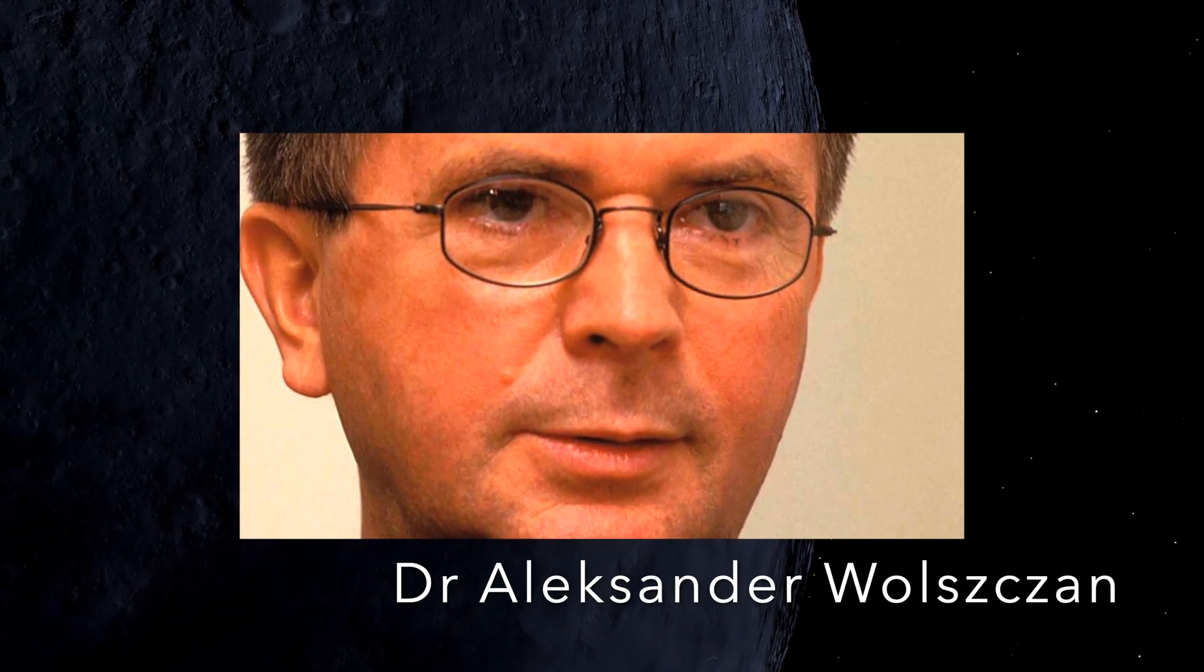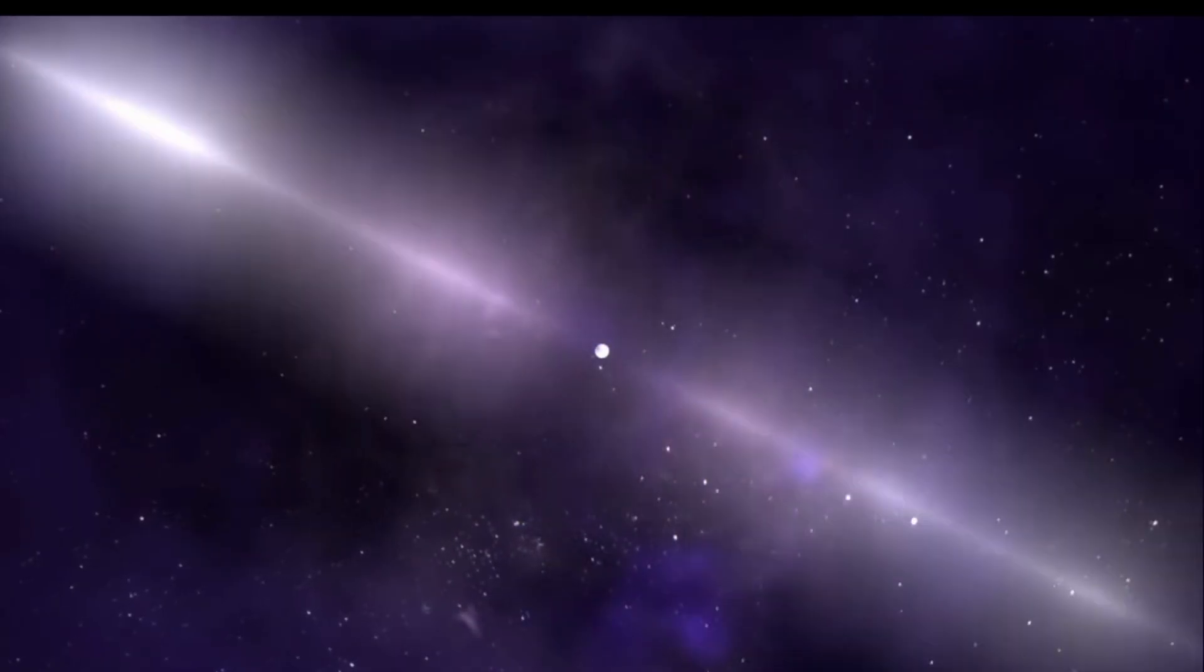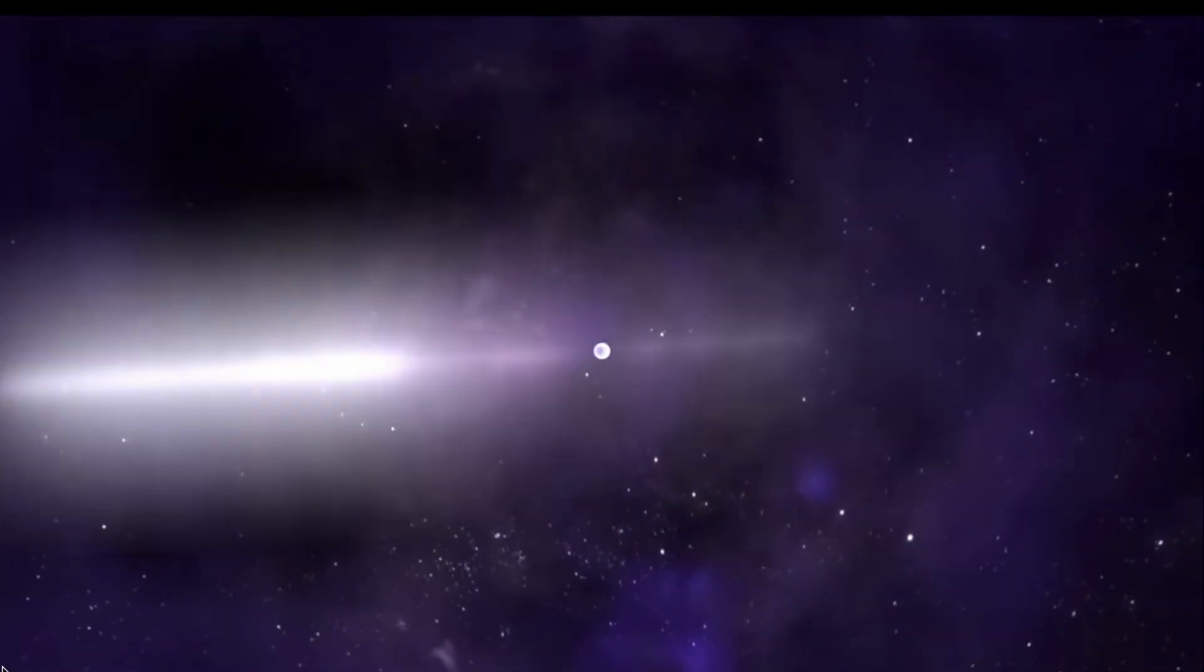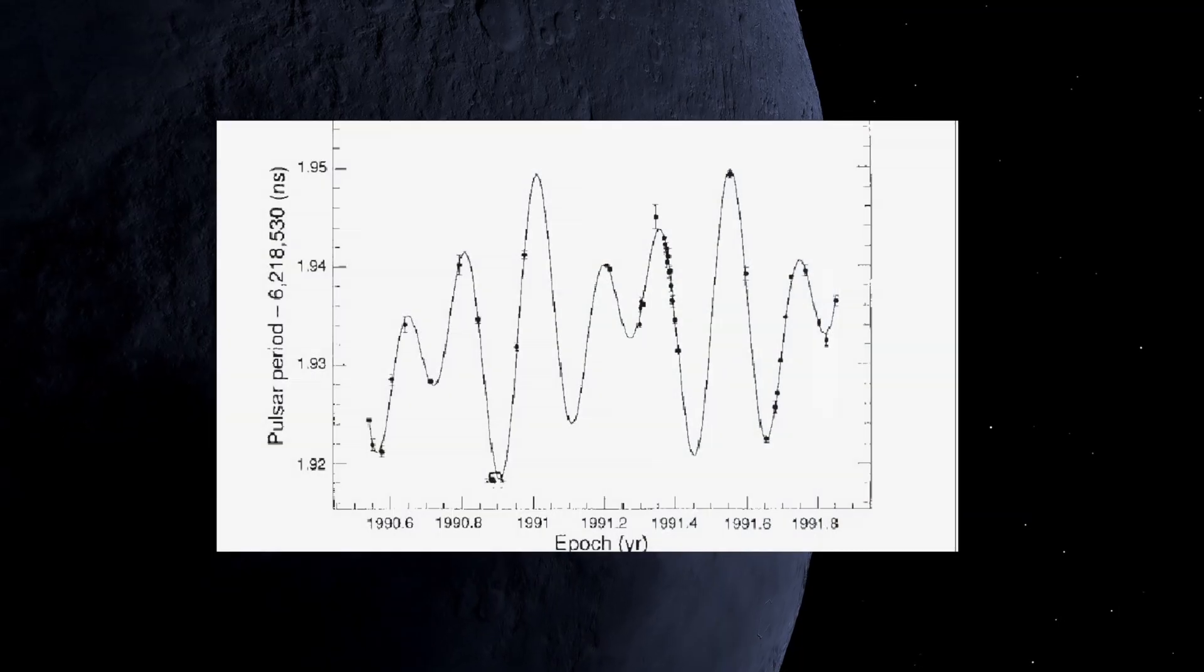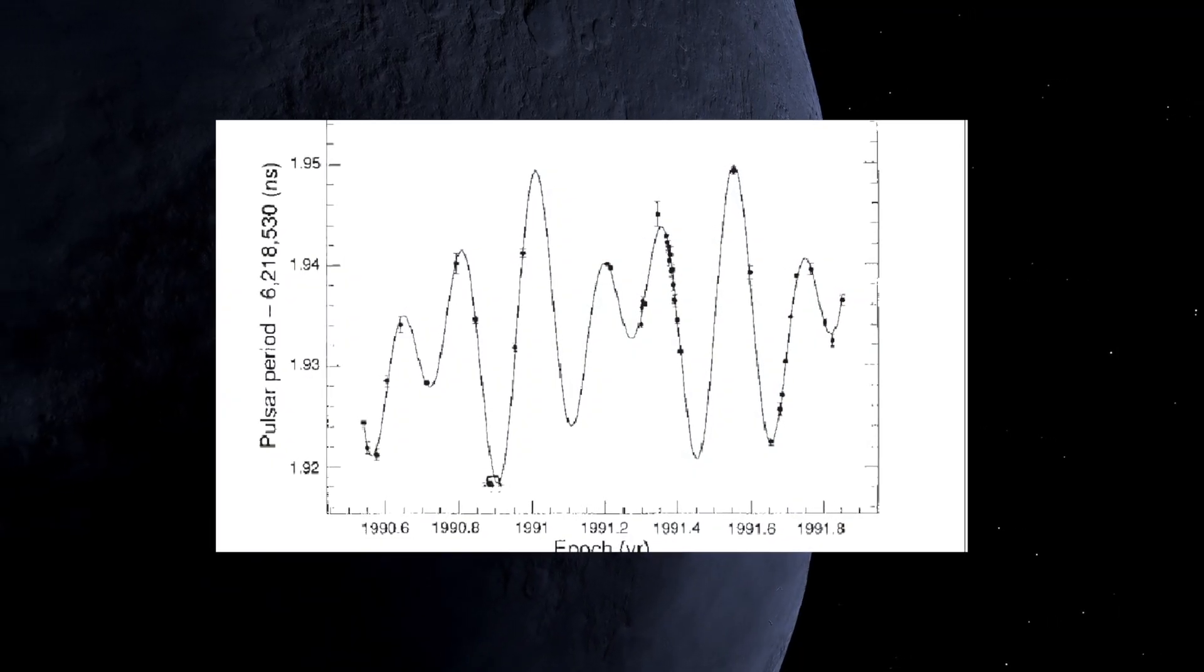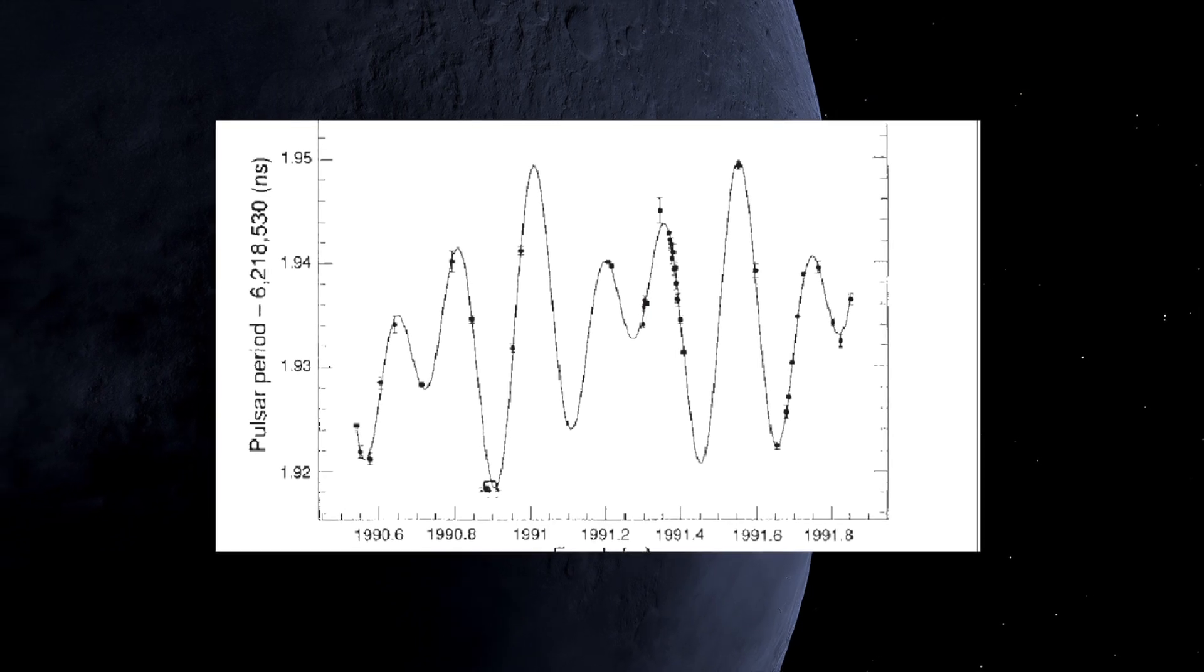It was this spin rate that two scientists, Dr. Alexander Wolszczan and Dr. Dale Frail, were studying in the early 1990s when they noticed some irregularities. These irregularities showed up as variations in the timing of the pulsar spin rate, which should normally be extremely regular and metronomic in nature.